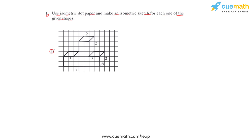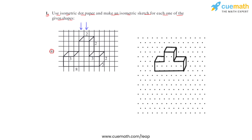In figure two of this question, we again see the oblique sketch of a 3D figure. Using the isometric dot paper, this is how the 3D figure is represented — this is the isometric sketch equivalent of the figure shown in the oblique sketch. All its faces are visible, and this is how a 3D figure is drawn using the isometric dot paper.